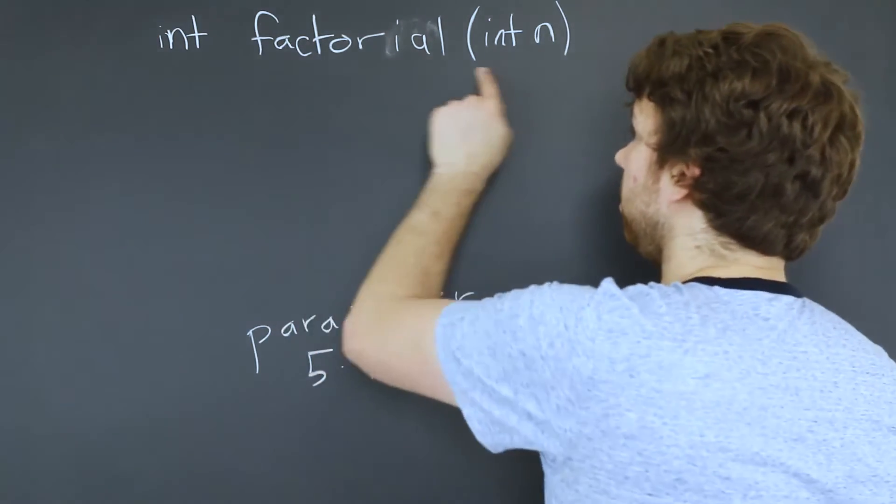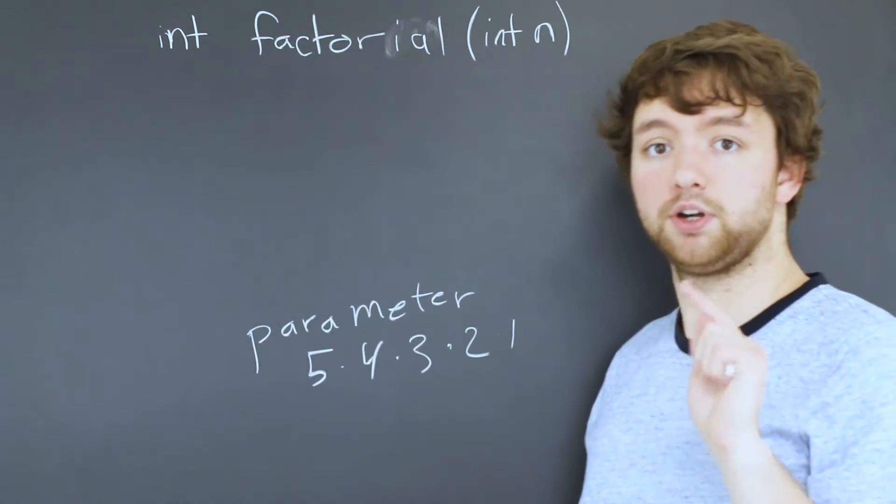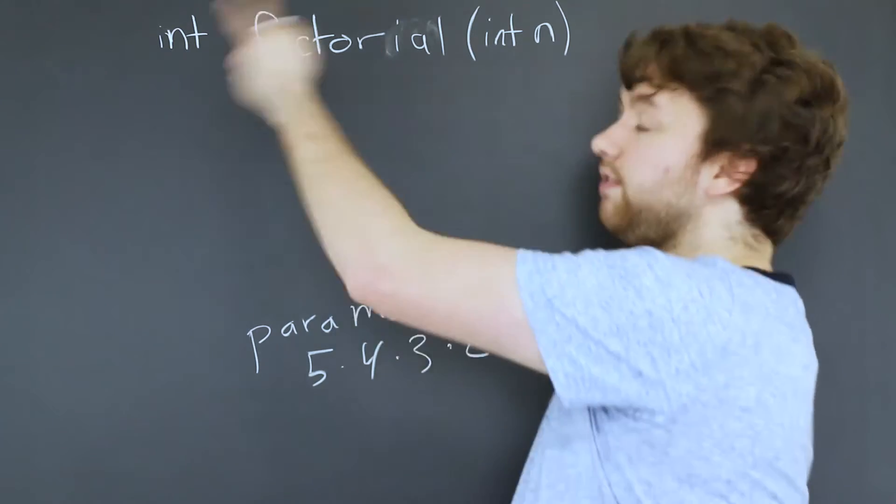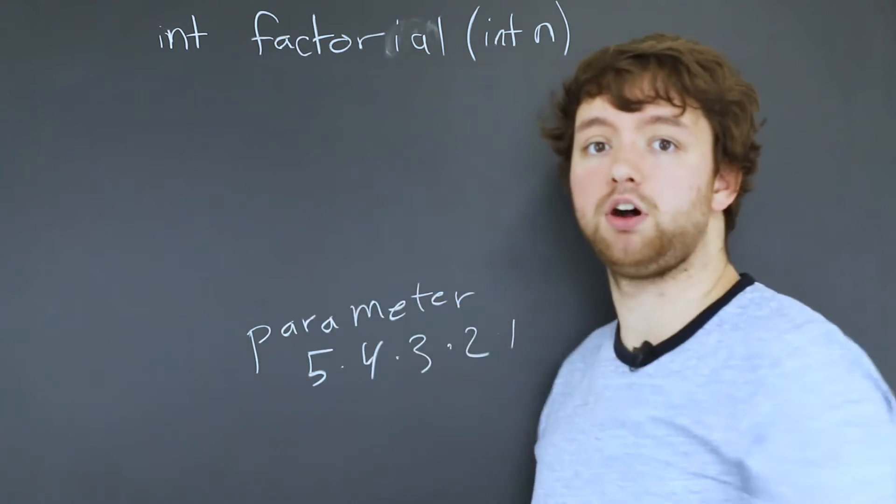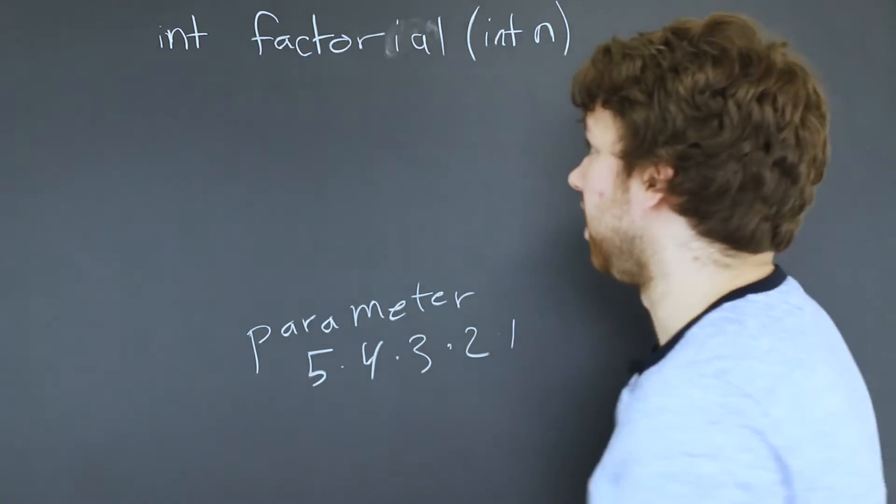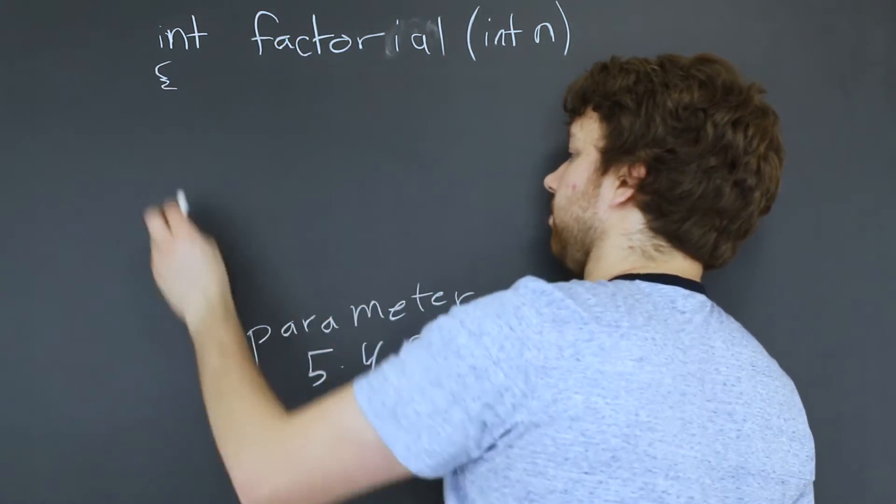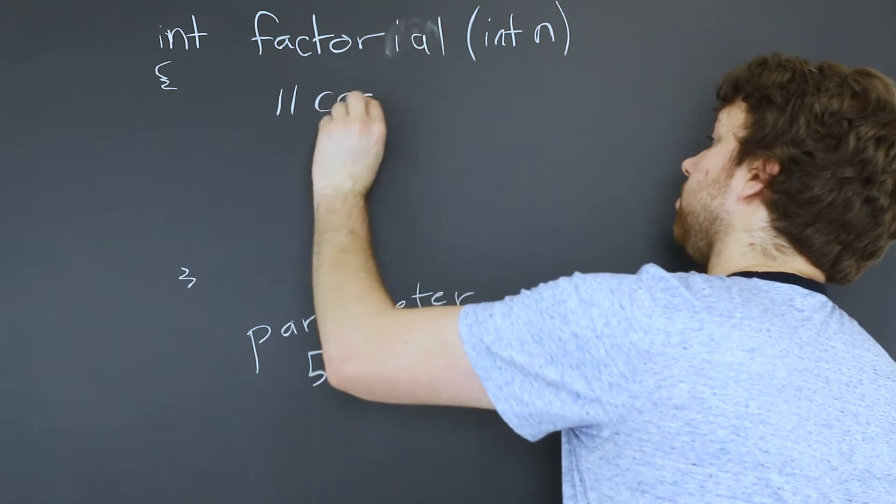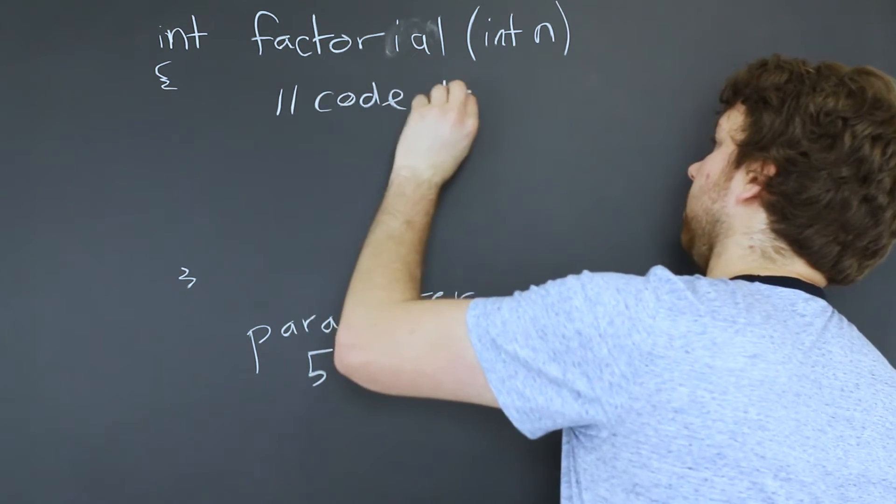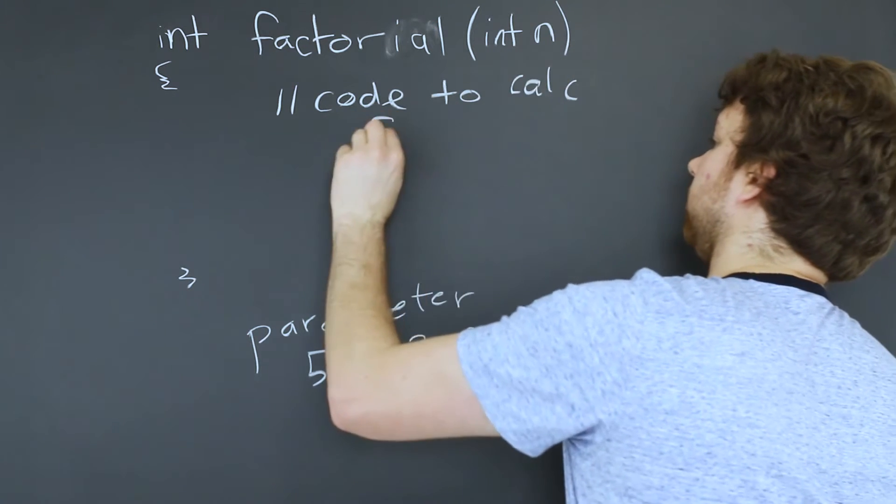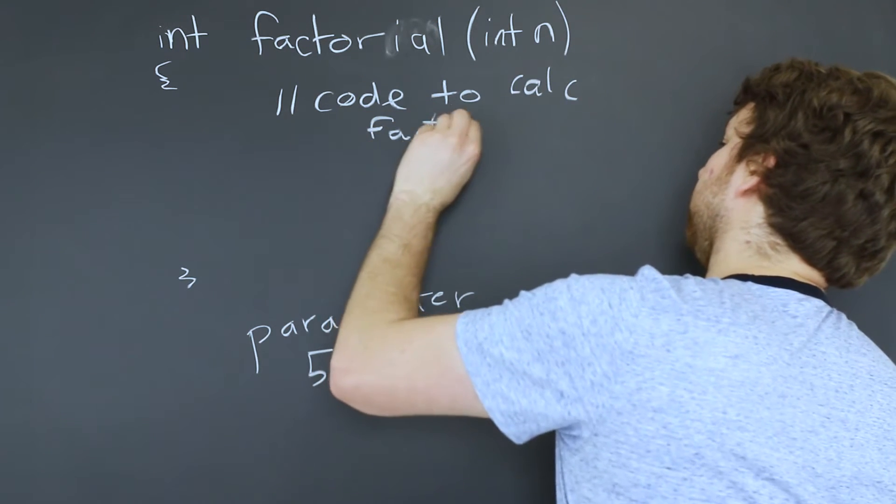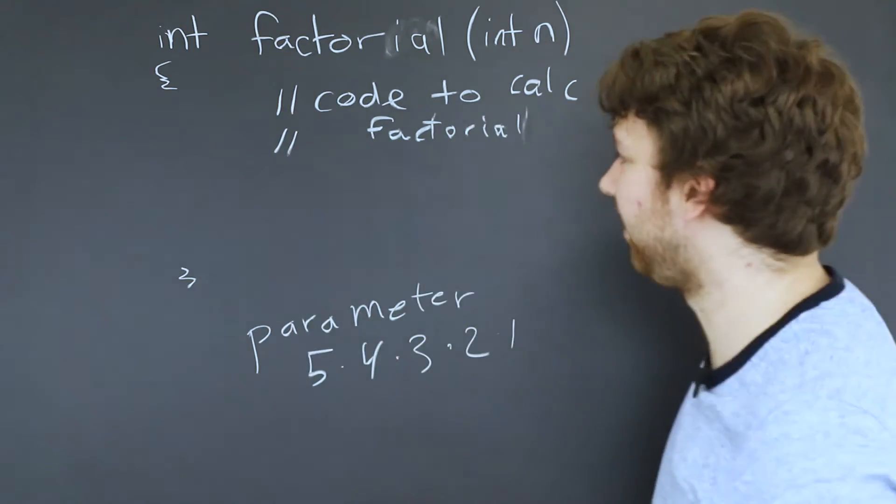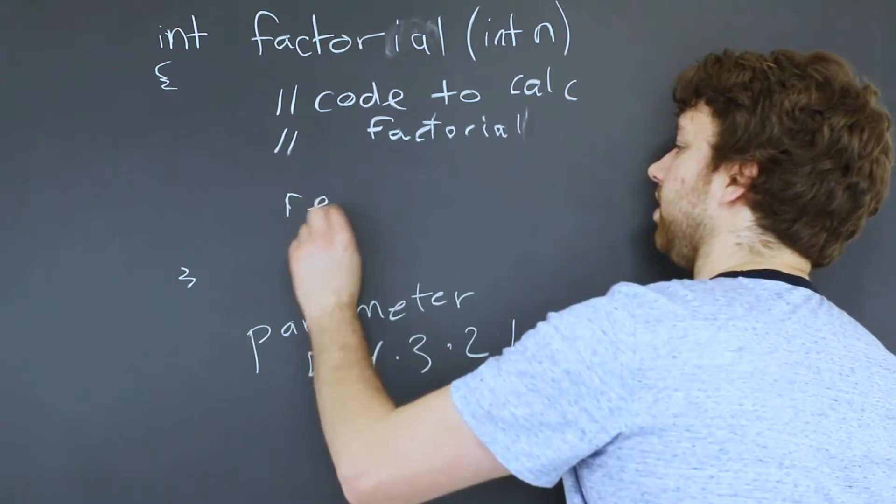So just from this so far we know that we are creating a function that takes an integer does some magic with it and then gives that number back out to the caller. So what now? Well we need the body of the function which is structured using these curly braces. And here we do the code to calculate the actual factorial. And I'm not going to worry about that because I can.